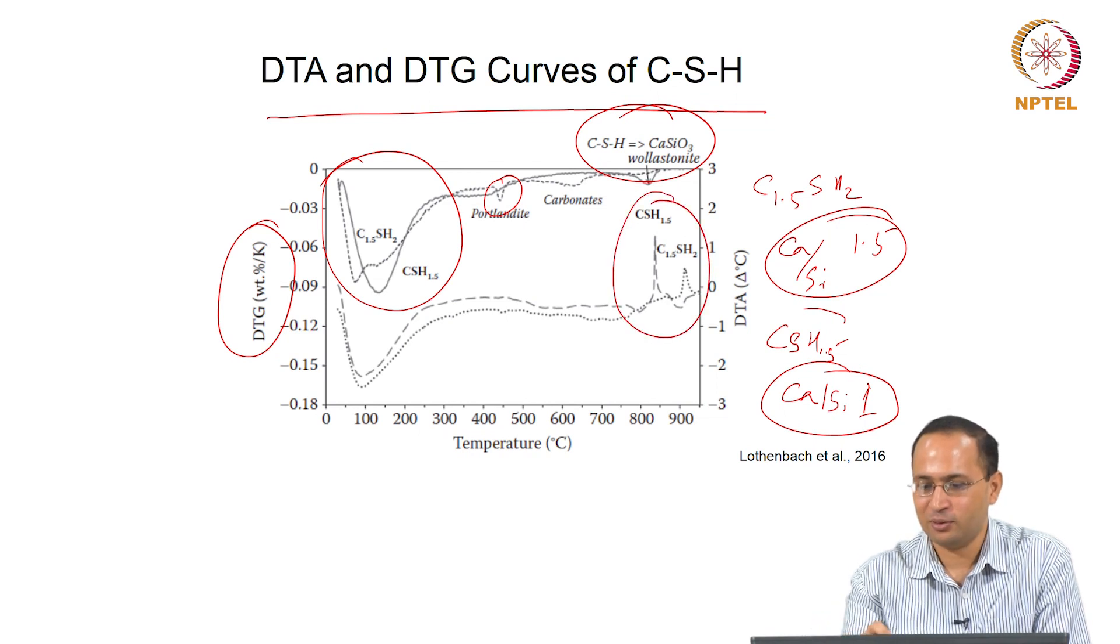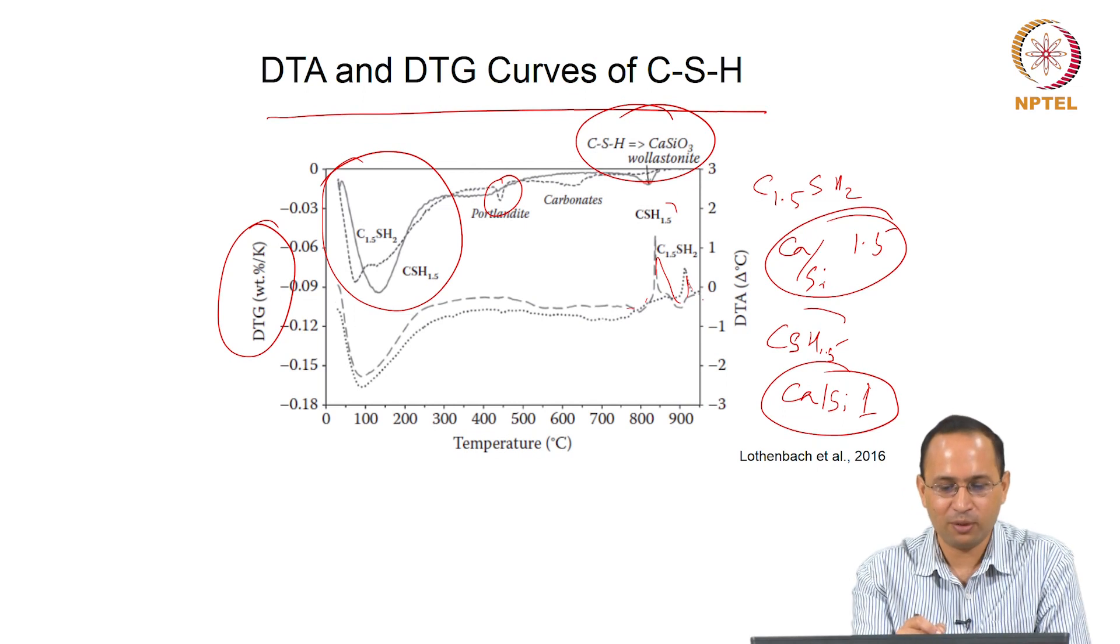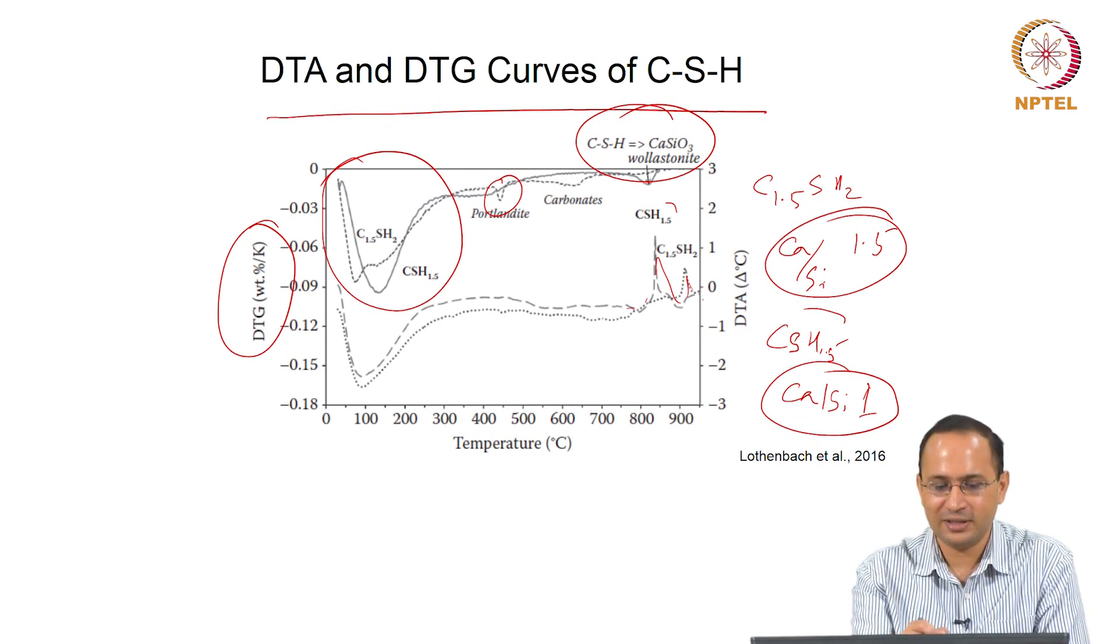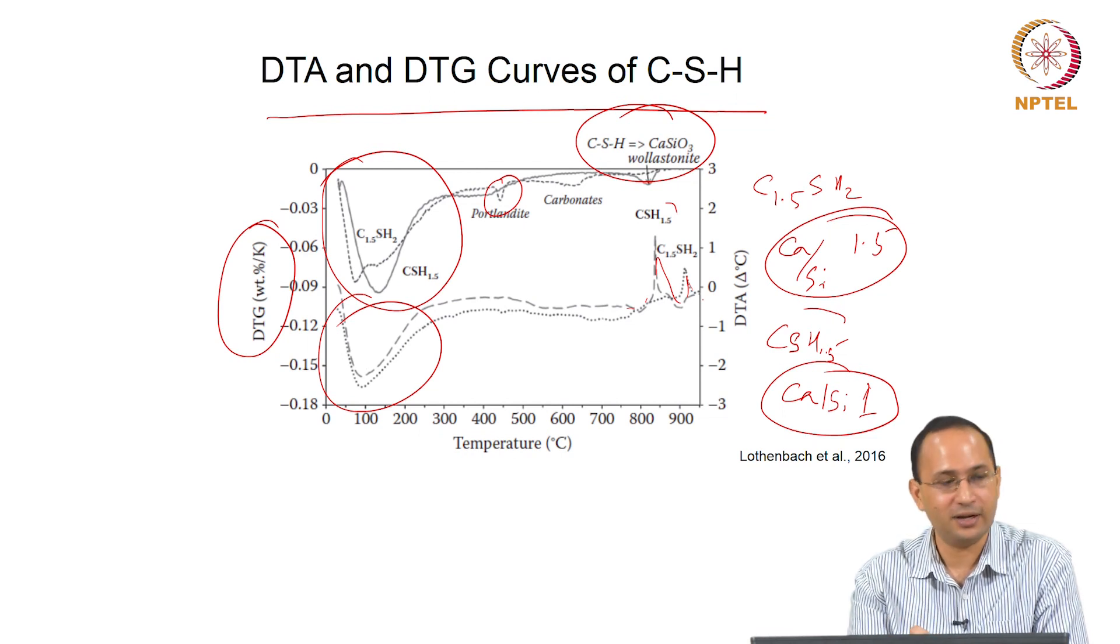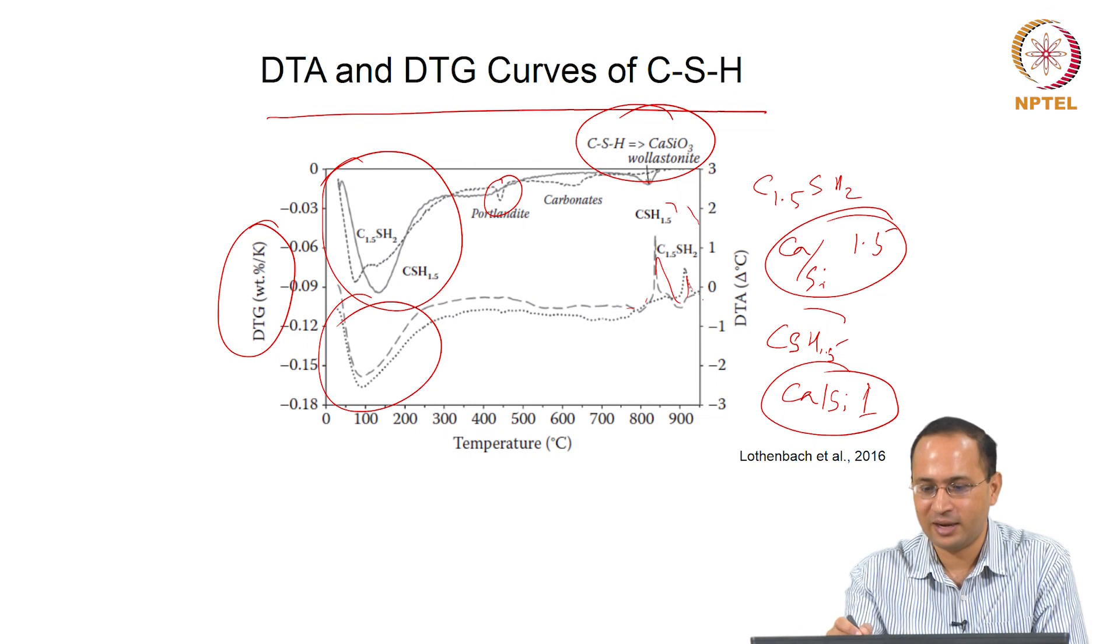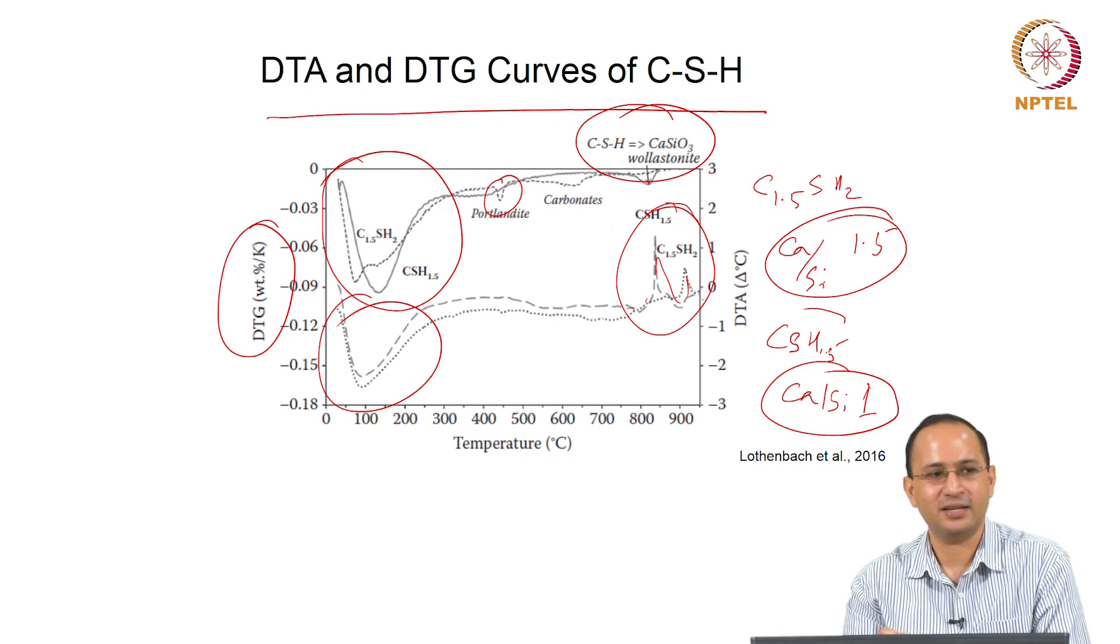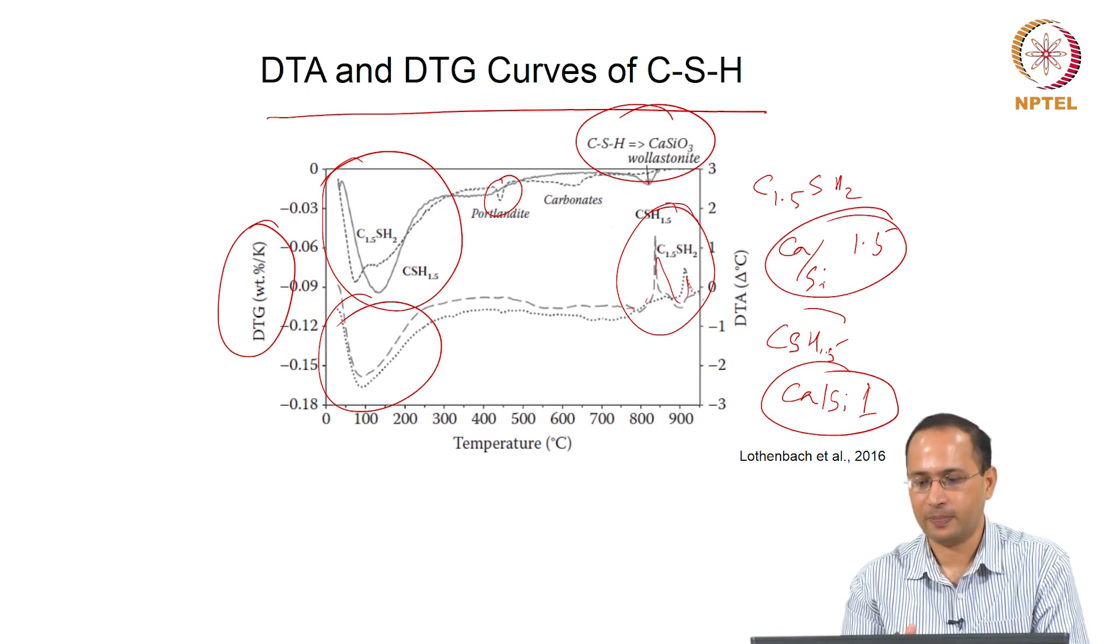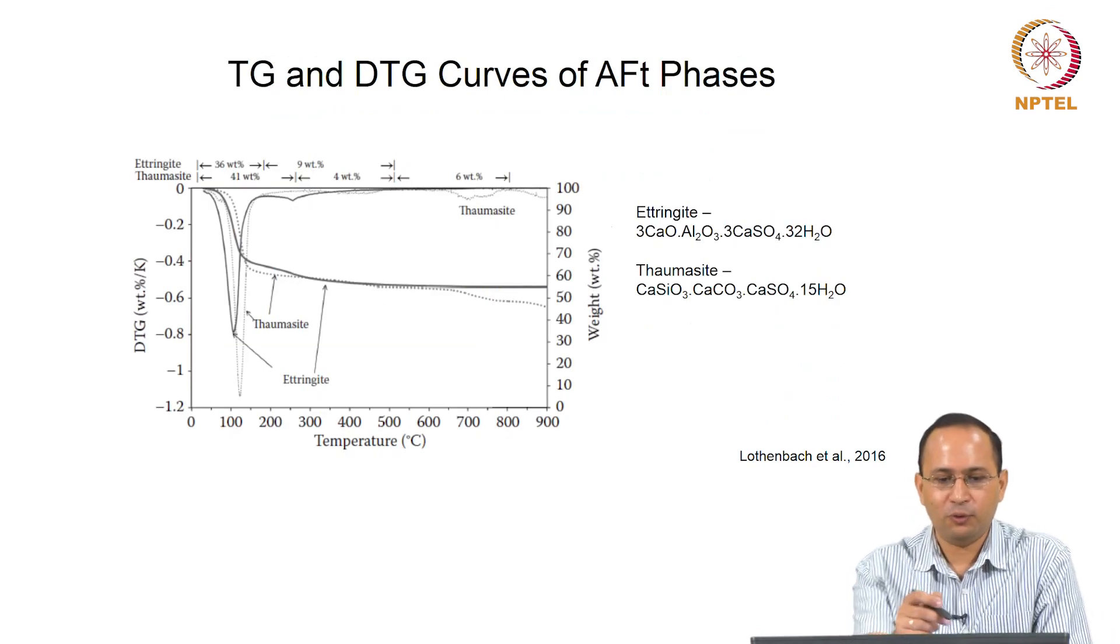This is the DTG curve now. The top one was TGA and this plot is DTA. You can see the difference - the bottom one is DTA. You see those changes at early temperatures like 100-150 degrees C in DTA also. Then you see primarily this transformation. When you talk about transformation, DTA is a very good technique to capture that.